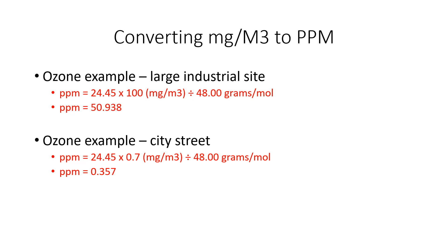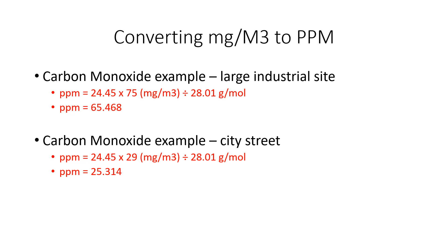Let's look at our next example: carbon monoxide. For a large industrial plant, our sample came back with 75 milligrams per meter cubed. When we plug it into the formula — 24.45 times 75, divided by 28.01 — we come back with a PPM of 65.468, which exceeds the OSHA limit of 50 ppm.